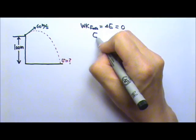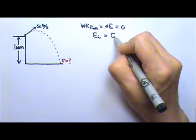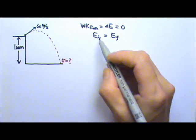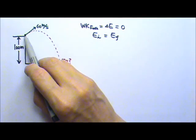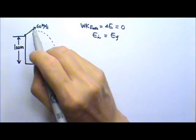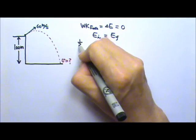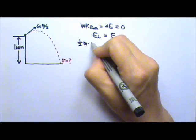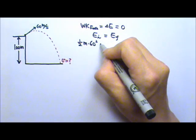So the system's initial mechanical energy equals the final mechanical energy. The initial is the moment after the projectile is shot. The projectile is moving at 60 meters per second, so there is one-half m v squared, the speed is 60.